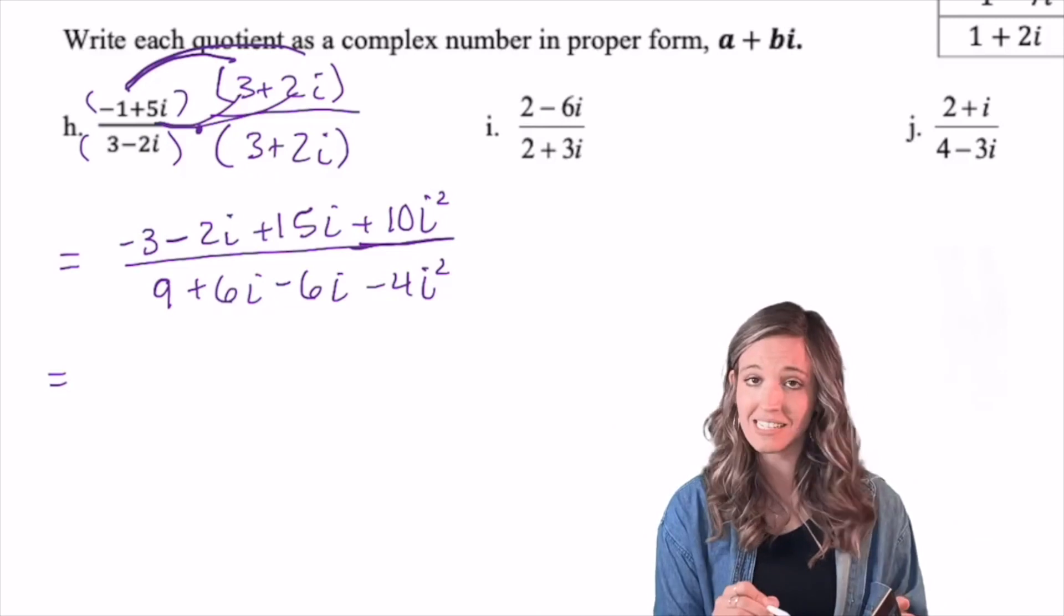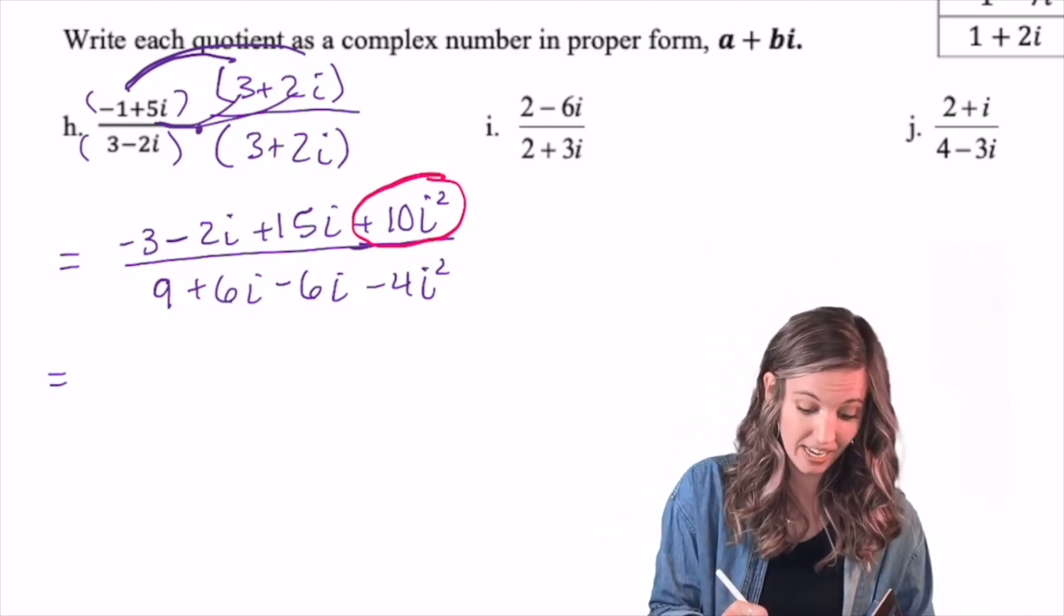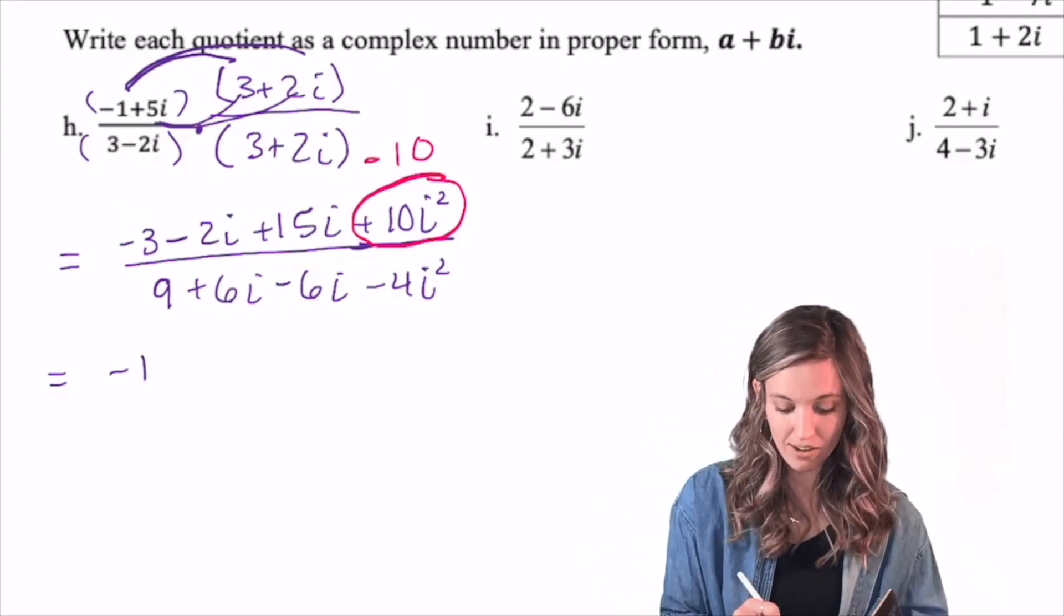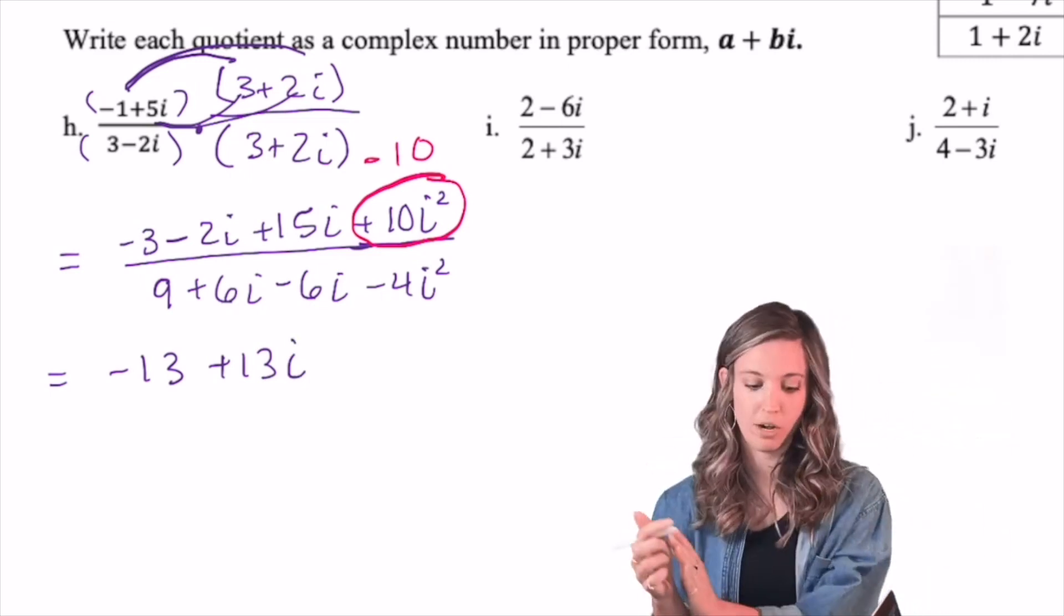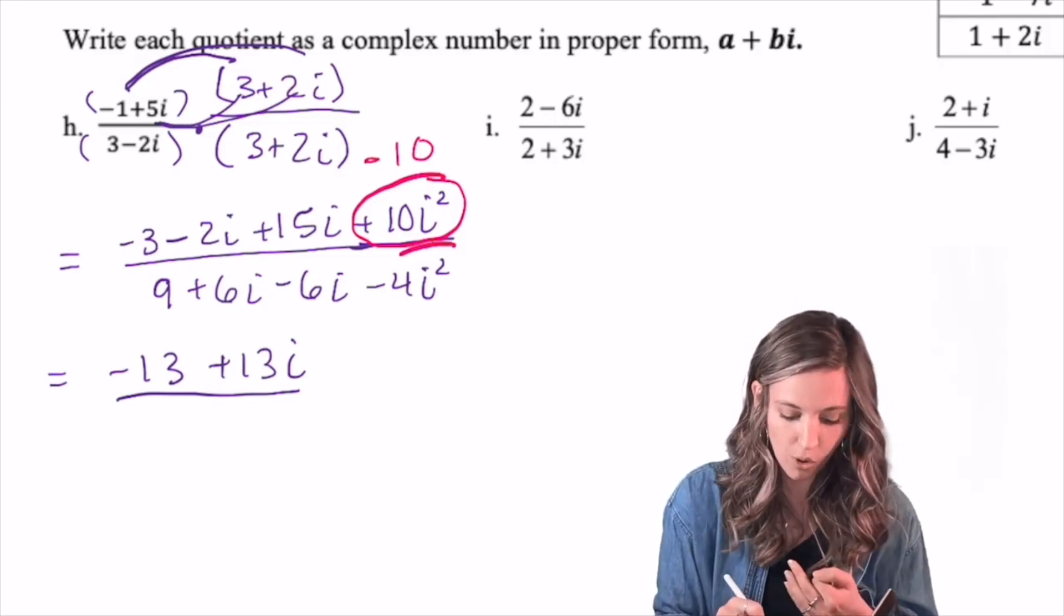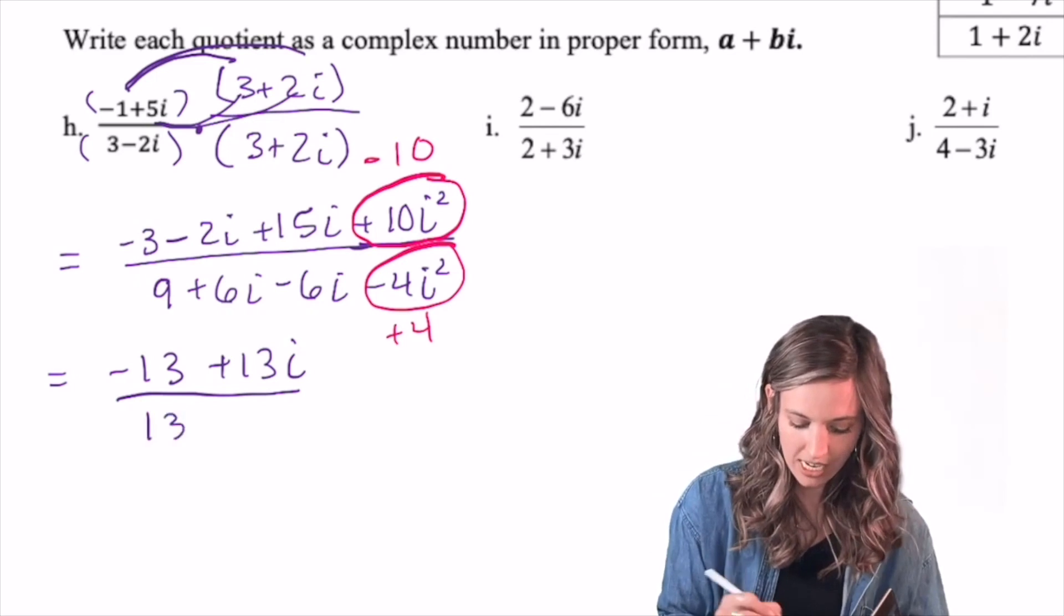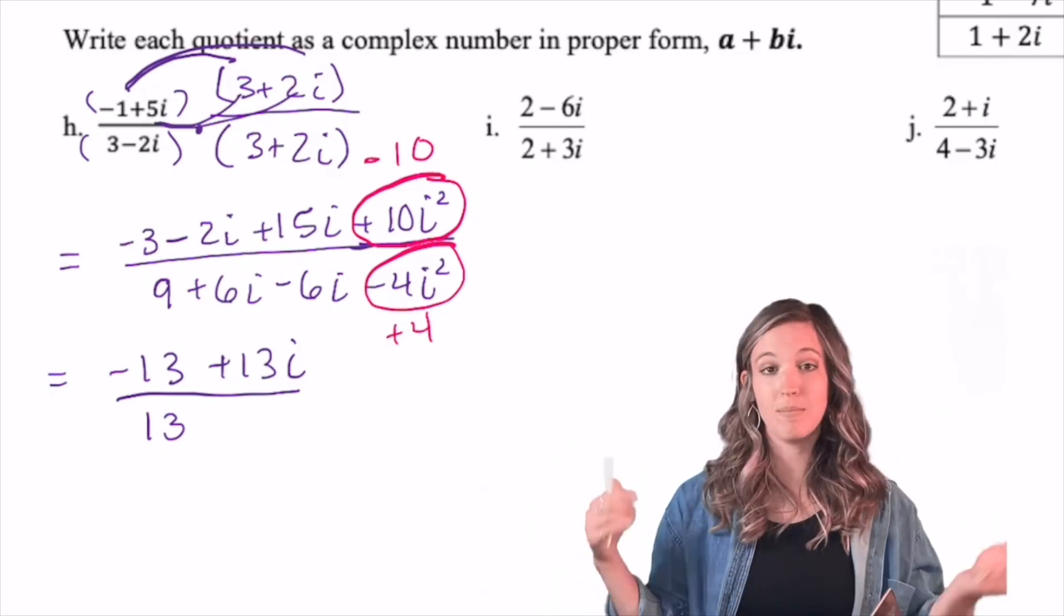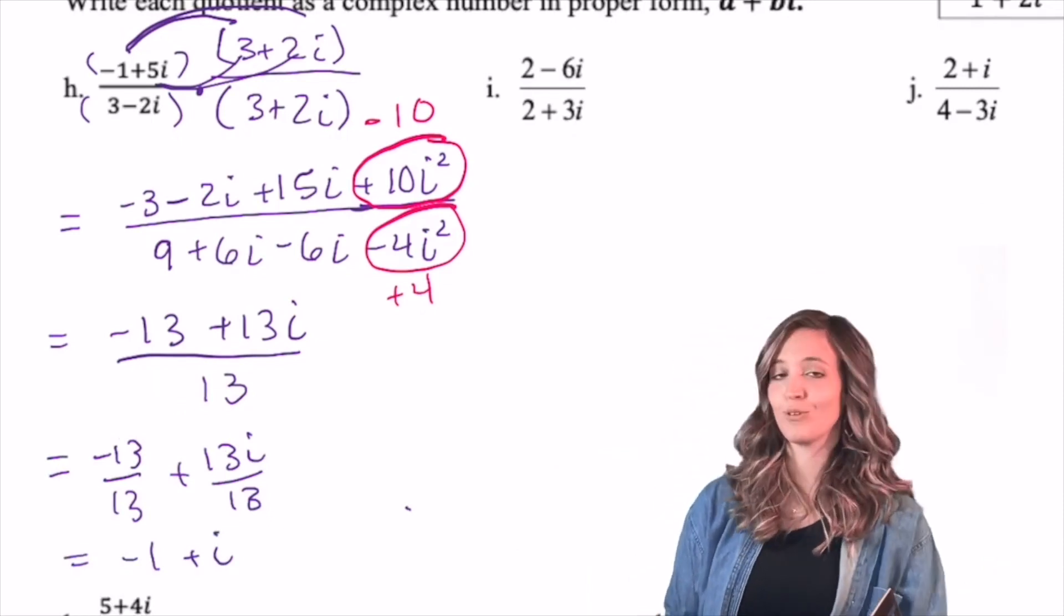Looking at just the numerator, I've got some i's that I can combine, and then I have this +10i². Well, remember, i² is just negative 1, so that's really going to be 10 times negative 1, so it's going to be a minus 10. So what can I simplify now in the numerator? I've got my real numbers. My -3 - 10 is -13, and then my imaginary is -2i + 15i is positive 13i. And look at that. I already wrote real part first, imaginary part second. Same deal with the denominator. Let's look to see what we have. We have some i's that we can combine, and we have that -4i². i² is really negative 1. -4 times -1 is positive 4. Real parts, 9 + 4 is 13. Imaginary parts, 6i - 6i, those add out. So I'm left with -13 + 13i, all divided by 13. So I got -13/13 + 13i/13. Well, those 13s divide out, so I'm left with -1 + i.